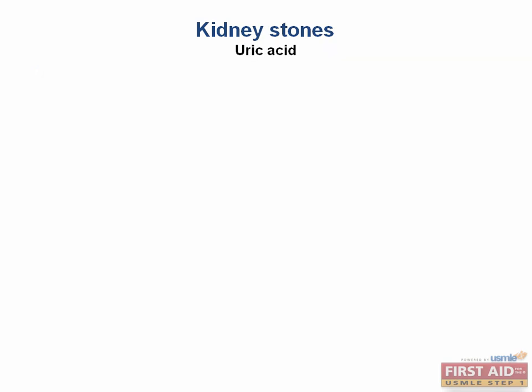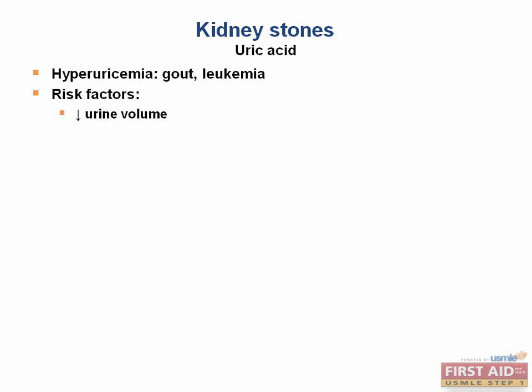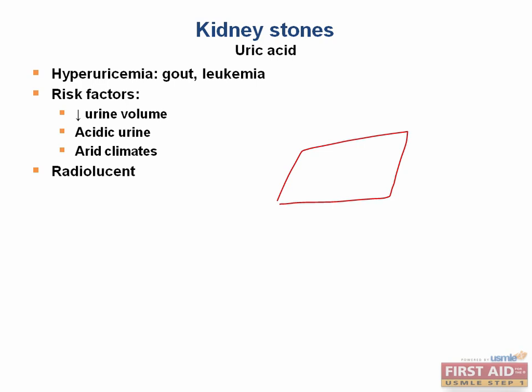Next are uric acid stones. These occur in conditions that increase uric acid excretion, such as gout or leukemia, where there is increased cell turnover and uric acid production due to purine metabolism. Risk factors include anything that decreases urine volume and makes the urine more acidic, such as an arid climate. These stones are special because they are radiolucent — they cannot be seen on x-ray — though they can still be seen with ultrasound and CT. On microscopy, they look rhomboid in appearance. Treatment is by alkalinizing the urine.